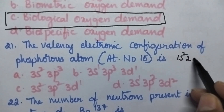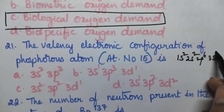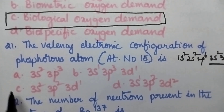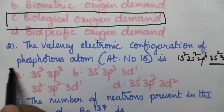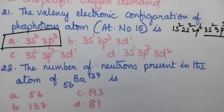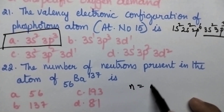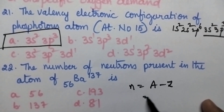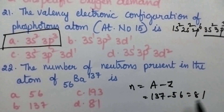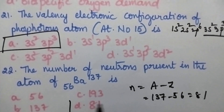The electronic configuration of phosphorus: atomic number is 15, so it is 1s², 2s², 2p⁶, 3s², 3p³. The valence configuration is 3s², 3p³, so option A is the right answer. The number of neutrons in an atom: neutrons = A − Z = 137 − 56 = 81, so option D is the right answer.